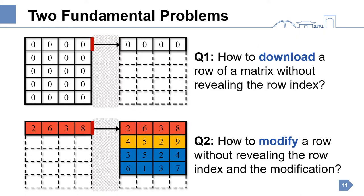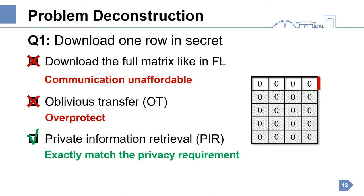To mitigate the privacy risk, we need to jointly solve two fundamental problems. The first is how to download a row of a matrix without revealing the row index, where the matrix represents the machine learning model. The second is how to modify a row without revealing the row index and the modification. For the first problem, one naive method is to download the full matrix like in federated learning, but it is computationally unavailable. Oblivious transfer overprotects the matrix. Private information retrieval matches the pricing requirement. For the second problem, a feasible way is secure aggregation, which secretly adds up all modifications without revealing any individual modification.